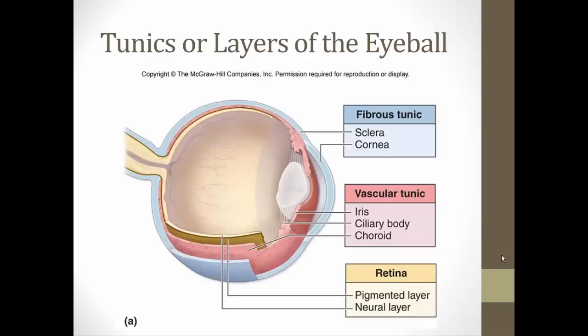Now we'll turn to the layers — or tunics — of the eye. There are three: the fibrous tunic, the vascular tunic, and the retina, sometimes called the neural tunic. Starting with the outermost, the fibrous tunic is a dense connective tissue consisting of the sclera, which is the white of your eye, and the cornea in front. The cornea is avascular and transparent so light can pass through it. Because it has few cells, it is easily transplanted with no immune rejection risk.